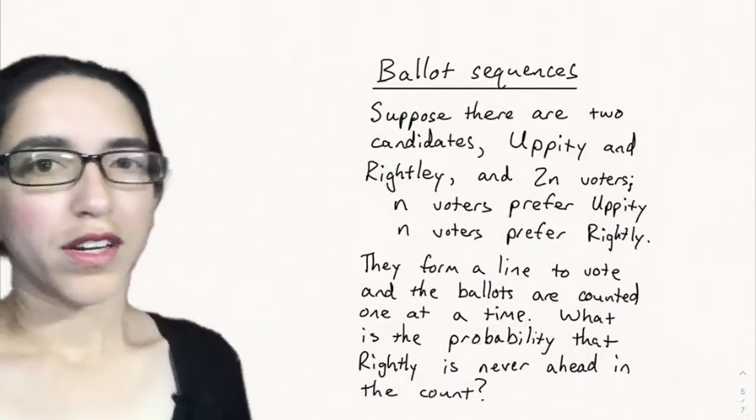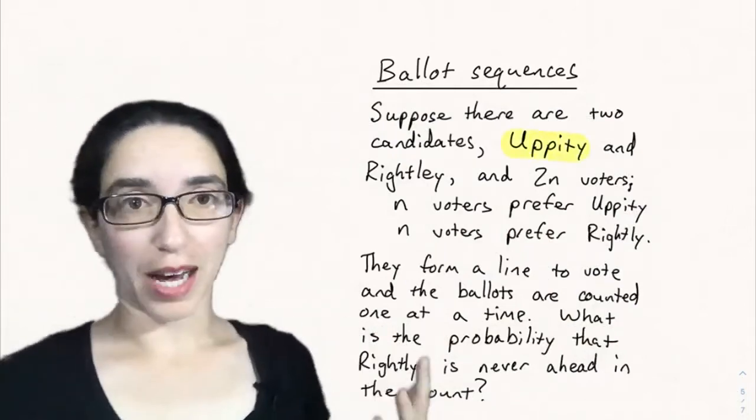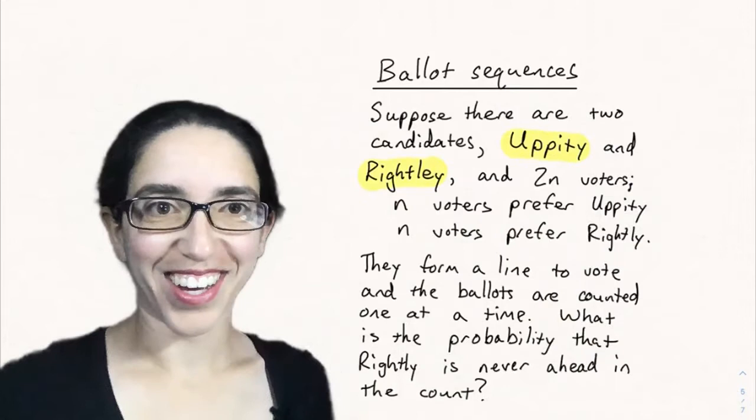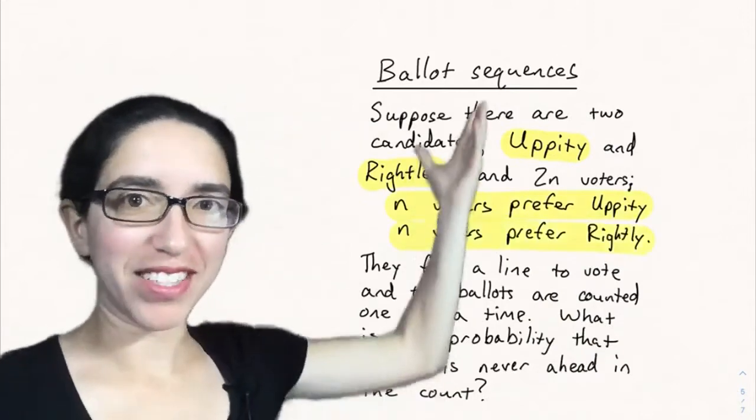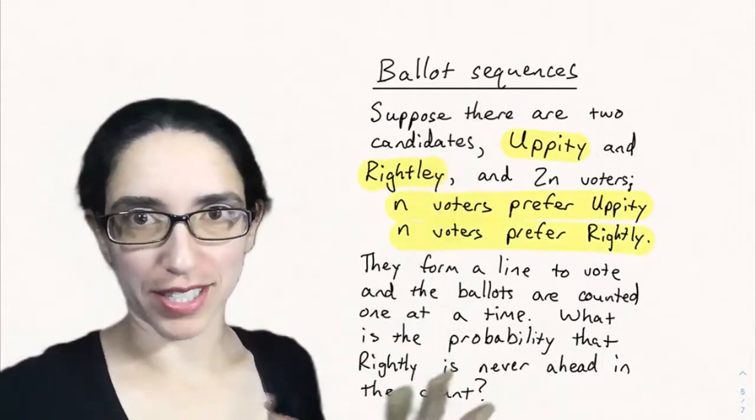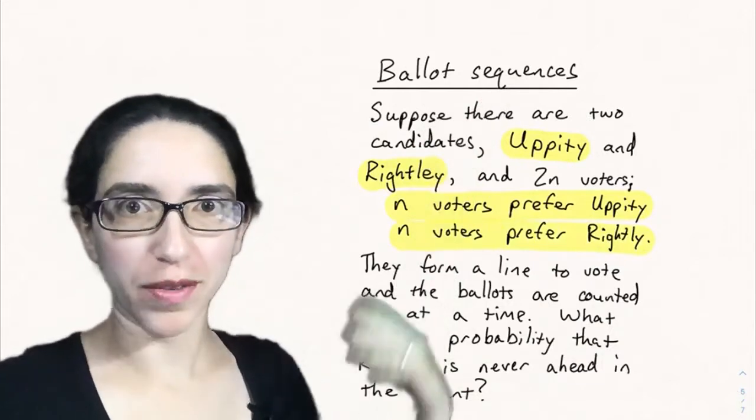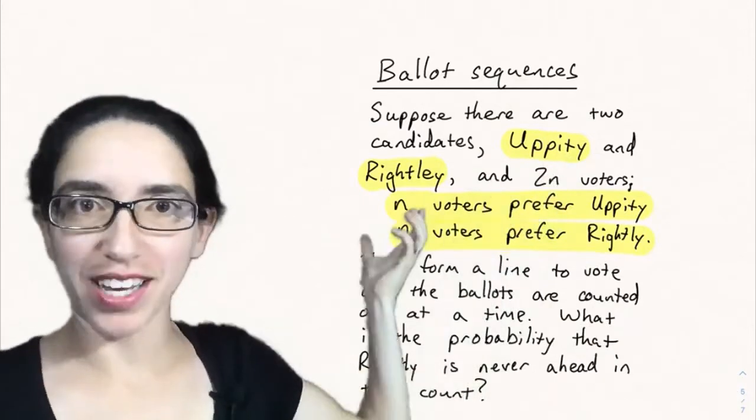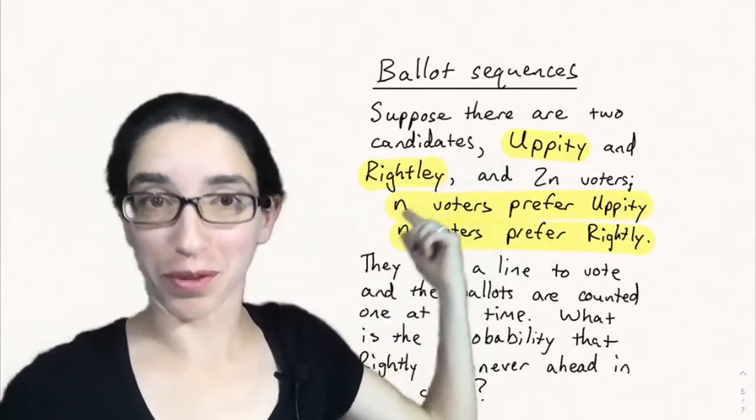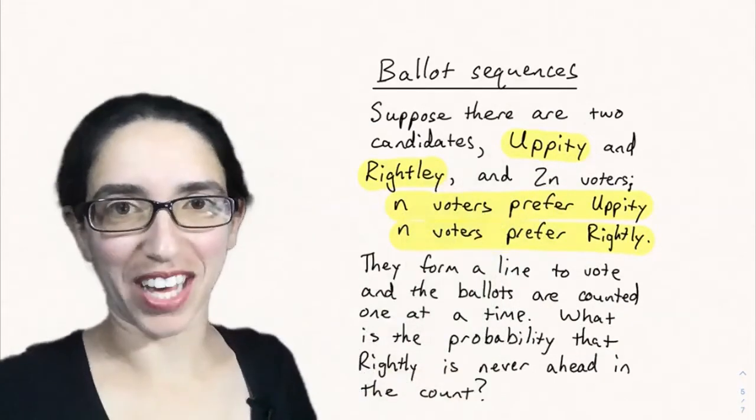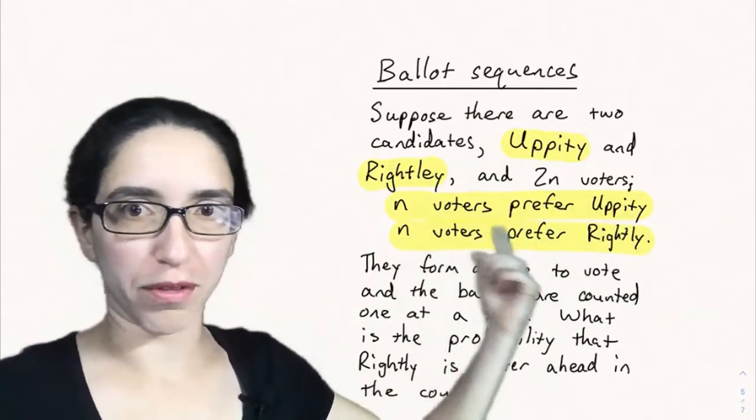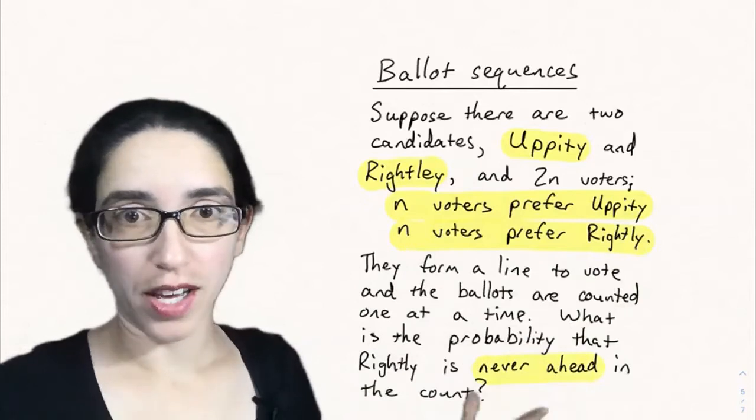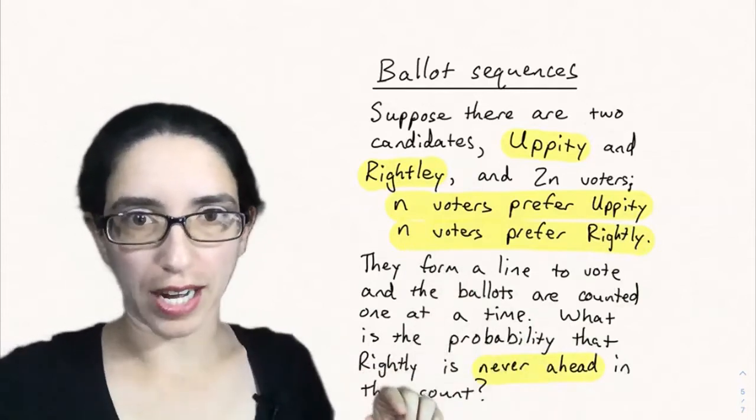Now I want to talk about a fun application of this to voting. Where do Catalan numbers come up in elections? Ballot sequences are another object that's counted by Catalan numbers. Suppose there's two candidates, uppity and rightly, and I named them so that it's like up and right. Say there's 2n voters, and n voters prefer uppity and n prefer rightly, so it's going to be a tie. They form a line to vote, and the ballots are counted one at a time.